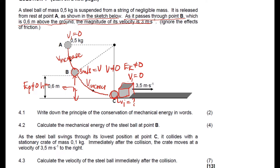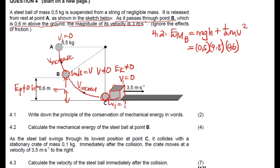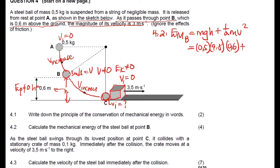For 4.2, the mechanical energy at B equals gravitational potential energy plus kinetic energy. So it's mass times g times height plus half times mass times velocity squared: (0.5)(9.8)(0.6) + ½(0.5)(3²). Punching the entire sum into the calculator gives 5.19 joules.